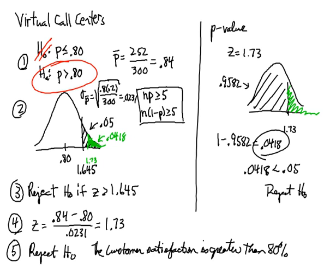One is the way I did first, is to calculate a test statistic and compare it to the critical value, the 1.645. The test statistic 1.73 is greater than 1.645. So the 0.84 is going to be to the right of that line. In other words, it's far enough away from the 0.8 to go ahead and reject the 0.8.